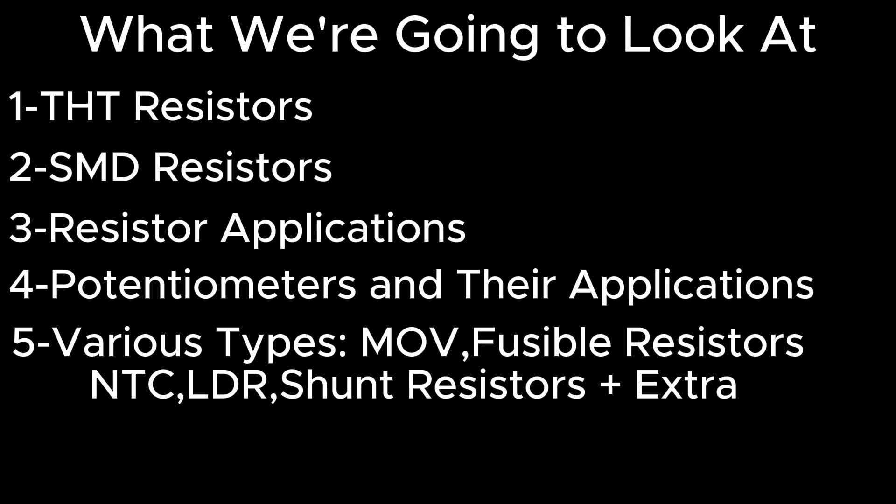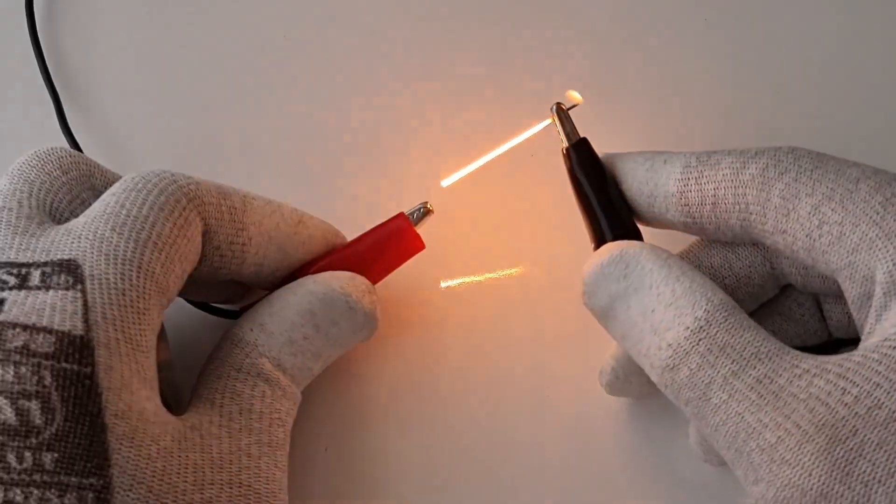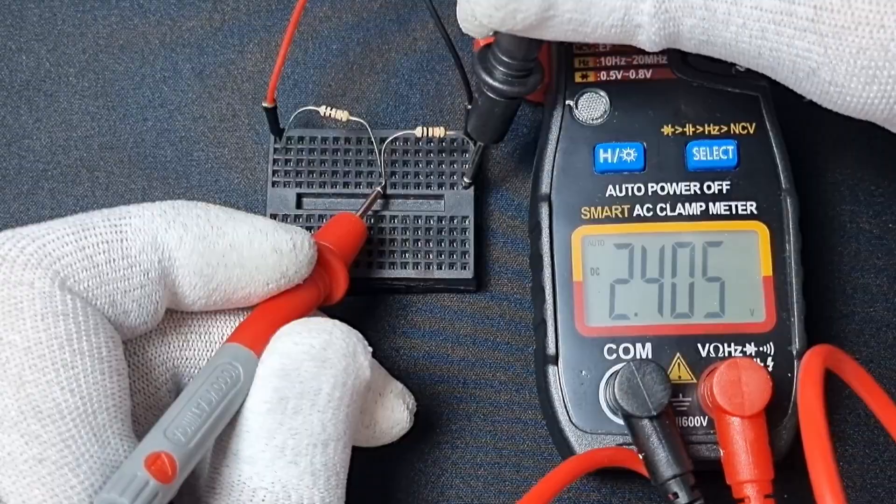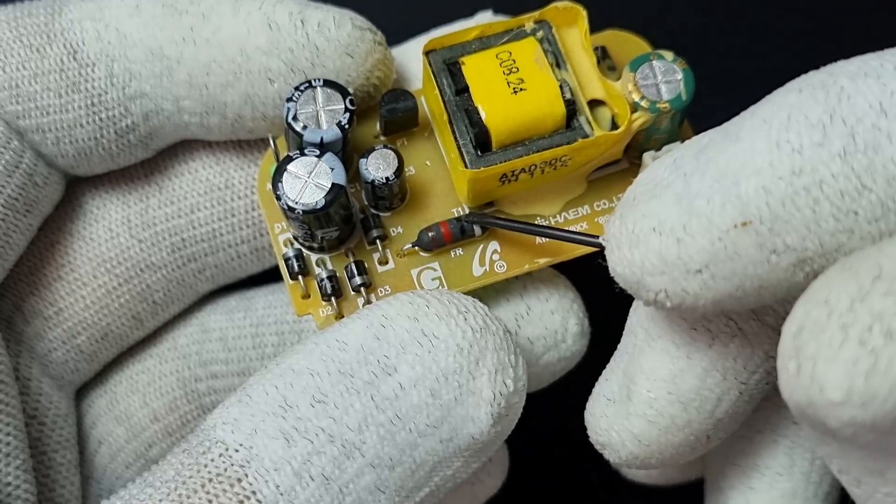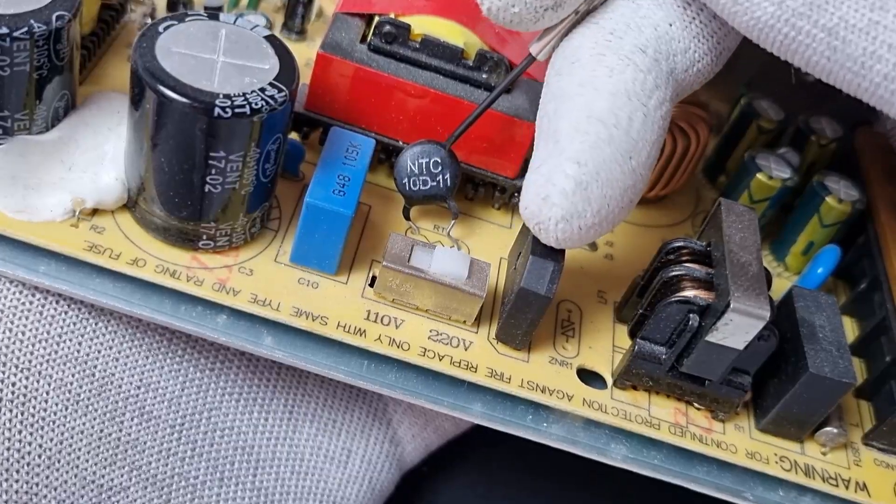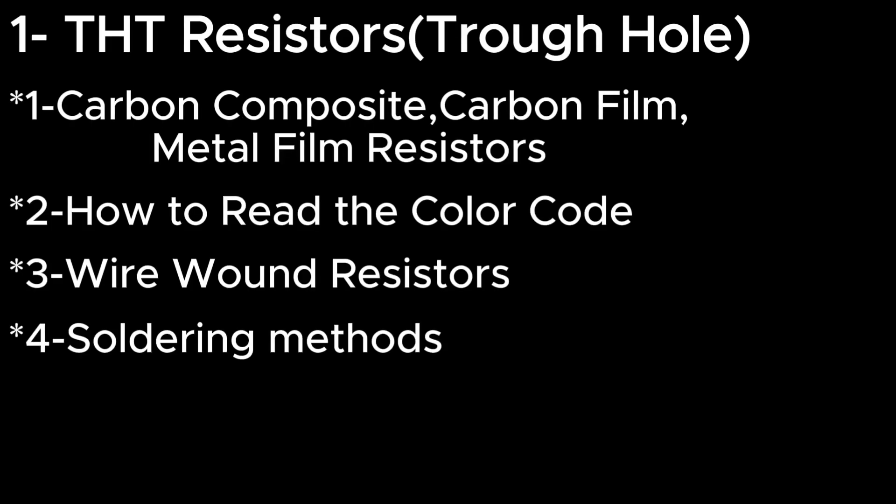In this video we are going to explore resistors. The main topics will be through-hole resistors, SMD resistors, resistor applications, potentiometers and their applications, and various types of resistors such as fusible resistors, MOVs, NTCs, LDRs, and shunt resistors.